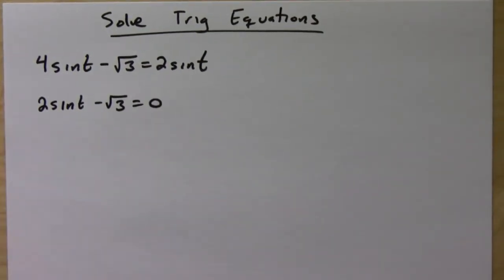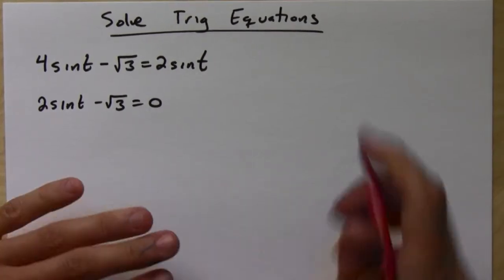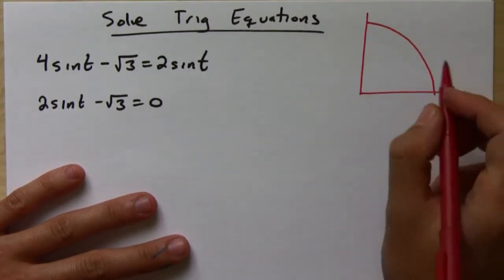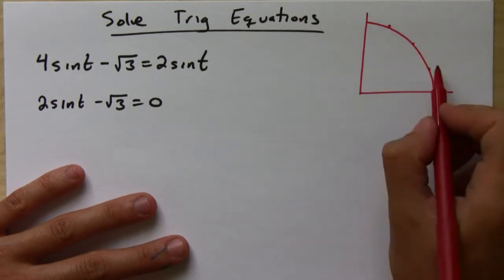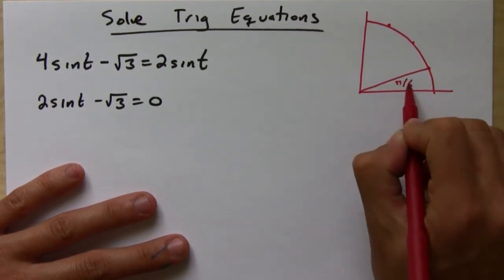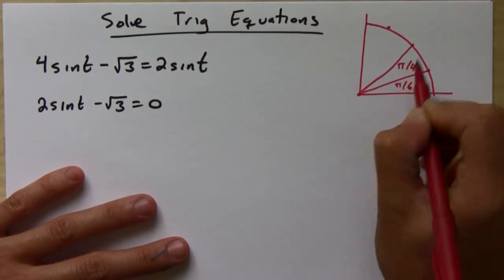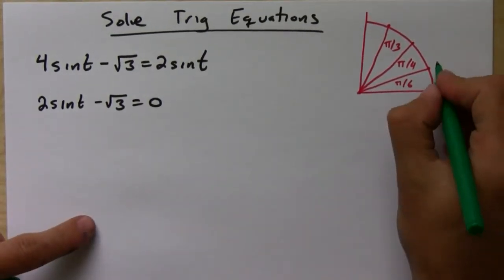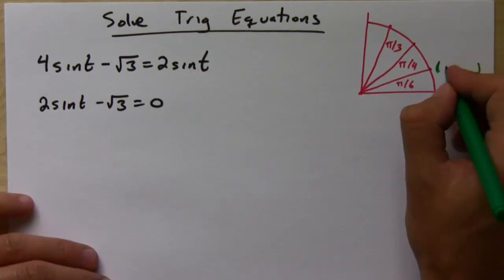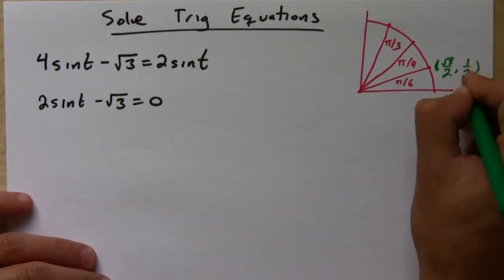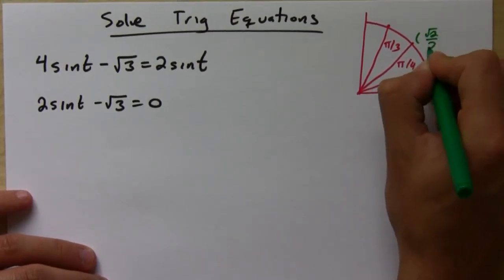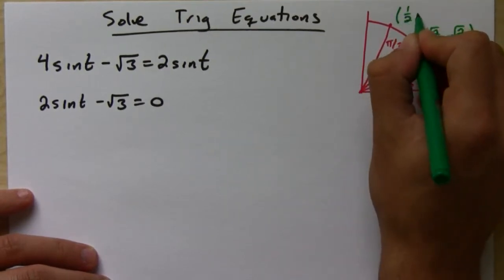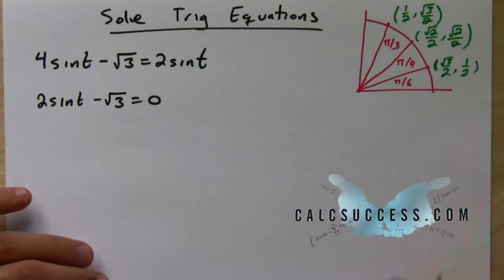And we want to use the values of the unit circle that we know. And remember, you have to have the first quadrant of the unit circle memorized. At least. If you want to memorize the entire thing, that's fine, but it's not necessary. The first quadrant is enough. So let me just write them down real quick.